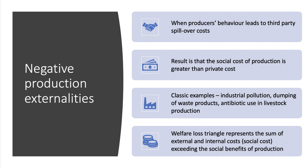First, negative production externalities. They come from the supply side of the market and they happen when producers' behaviour leads to third-party spillover costs. So a producer imposes an extra cost on somebody else who lies outside the immediate transaction. The result is the social cost of production is greater than the private cost. Examples include things like pollution, dumping of waste, and the use of antibiotics in livestock production.